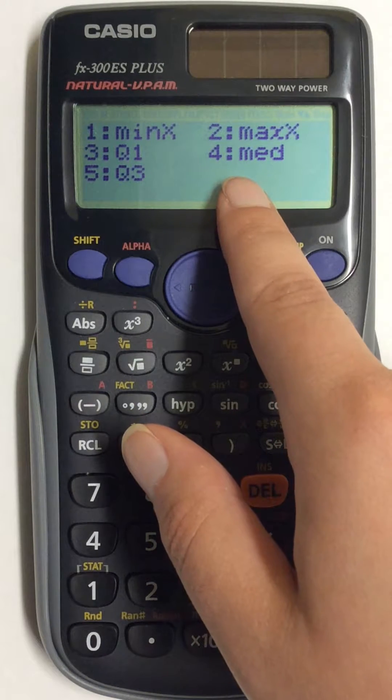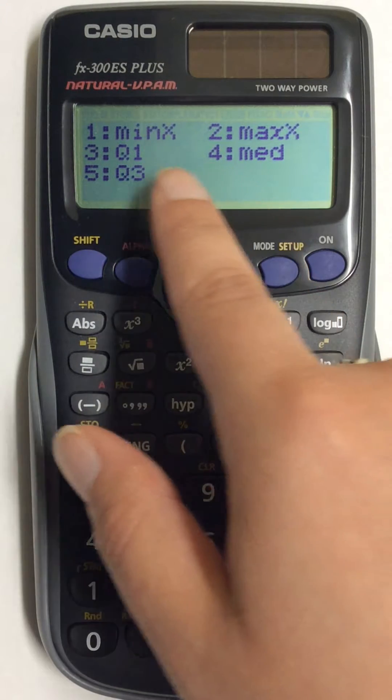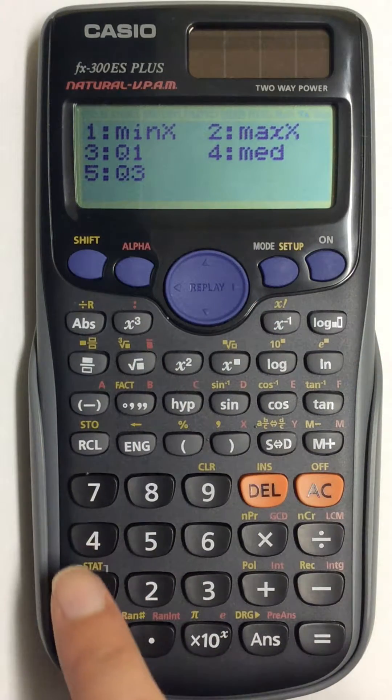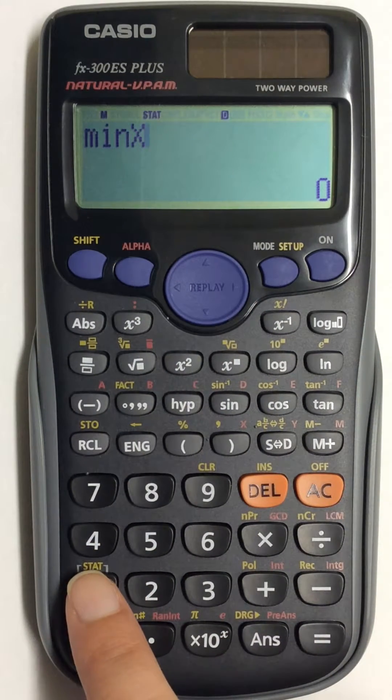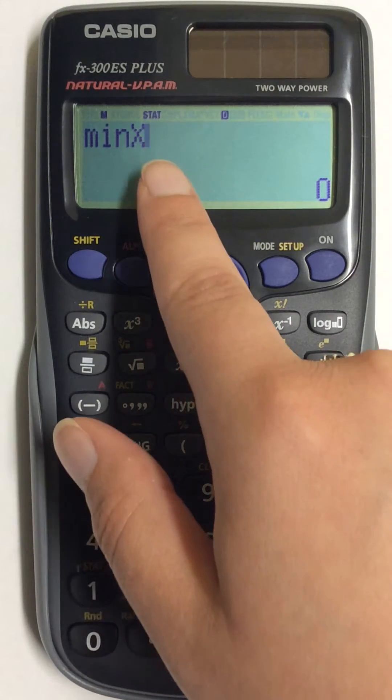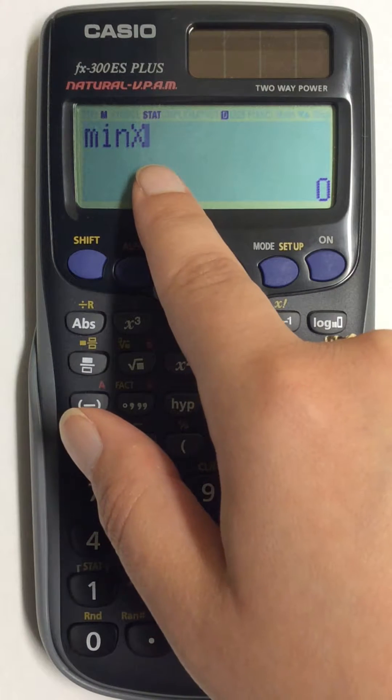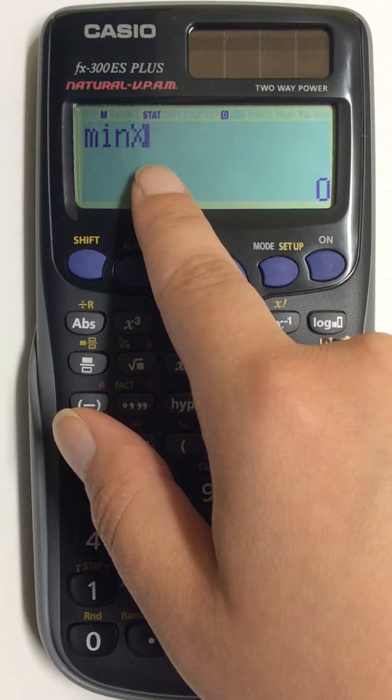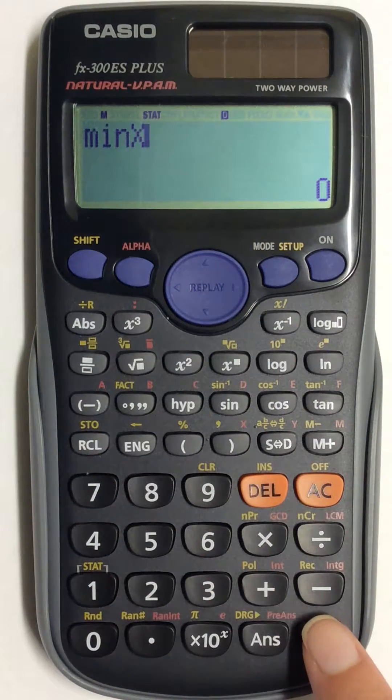So if you wanted to find your minimum, you would just press 1, and then again, your cursor is blinking, so that means that you haven't actually found the value yet. You first need to press ENTER.